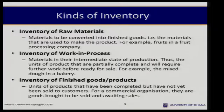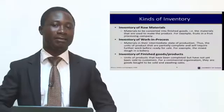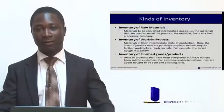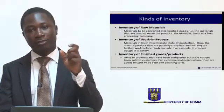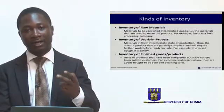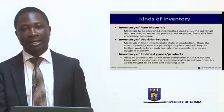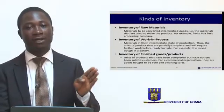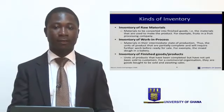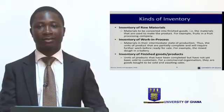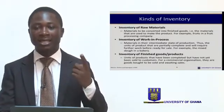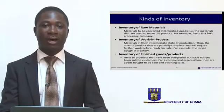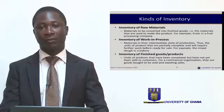You should be aware that the kinds of inventory available in a manufacturing concern may not be the same as that of a trading organization. Because a manufacturer buys raw materials and converts them into finished goods, you could have various types of inventory within a manufacturing organization: inventory of raw materials, inventory of work in progress — that is, materials in their intermediate state of production — and inventory of finished goods or finished products.